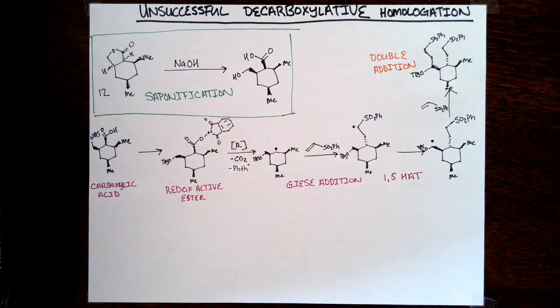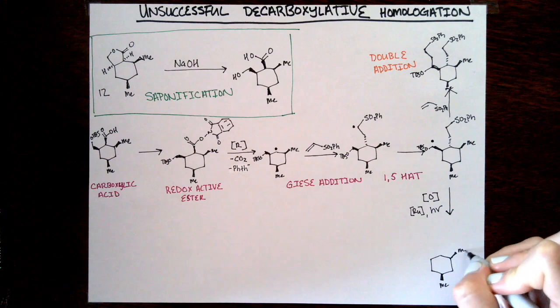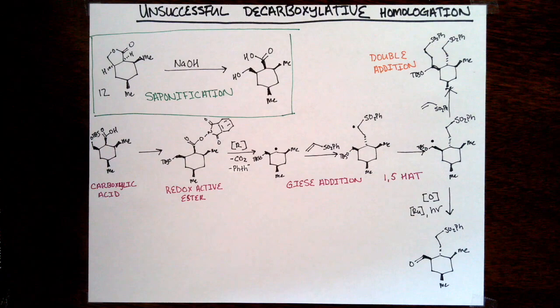That's where things started going downhill because they saw further addition of that radical into another equivalent of the electron-deficient alkene, which was undesirable. After their initial attempt didn't work, they noticed that they were forming this alpha-oxy radical. If they could just oxidize the alpha-oxy radical up to the aldehyde, that would set them up really well to convert that aldehyde to an alkene.